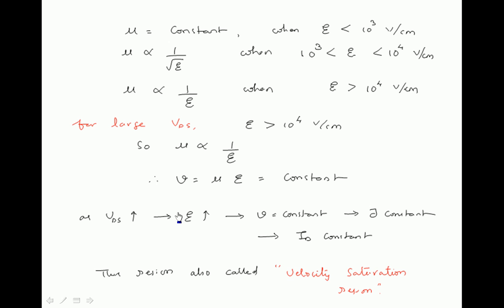Regarding the dependence of mu on electric field: mobility is constant when electric field is less than 10^3 V/cm. When electric field is in the range of 10^3 to 10^4 V/cm, mu is proportional to 1 over the square root of the electric field. When electric field is greater than 10^4 V/cm, mobility is directly proportional to 1 over electric field.